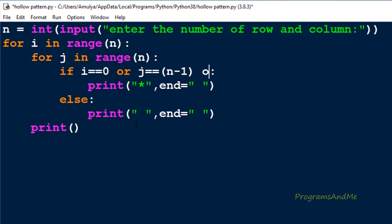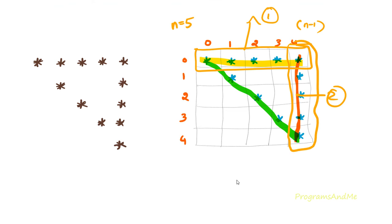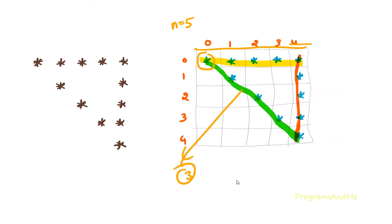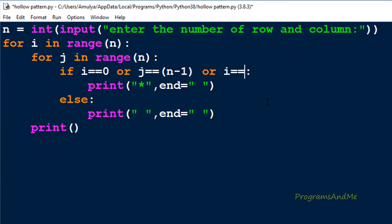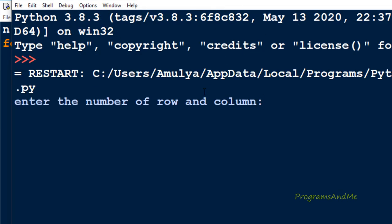For the third part, we want a star where row equals column: i=0 j=0, i=1 j=1, i=2 j=2, i=3 j=3, i=4 j=4. When column equals row we want a star, so the condition is i == j. Rest of the program stays the same. Let's execute it — and here we can see the output.